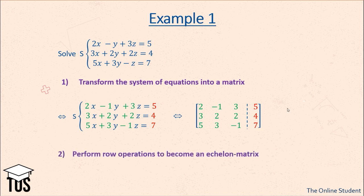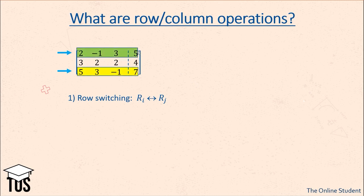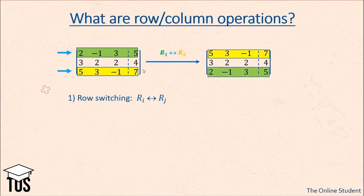The second step is to perform row operations on this matrix to become the echelon matrix. There are three types of row operations. The first one, the easiest, is row switching. Let's say we want to switch the first row with the third row. We indicate that we switch these rows, and as you can see the first row and the third row are simply swapped.